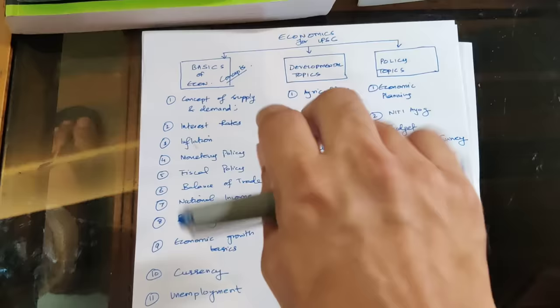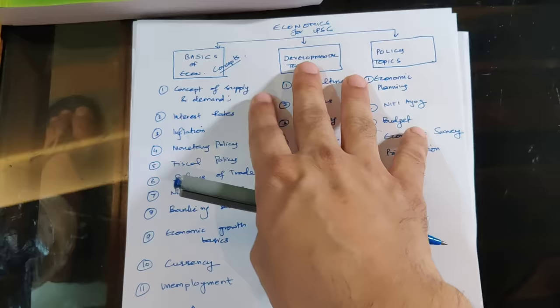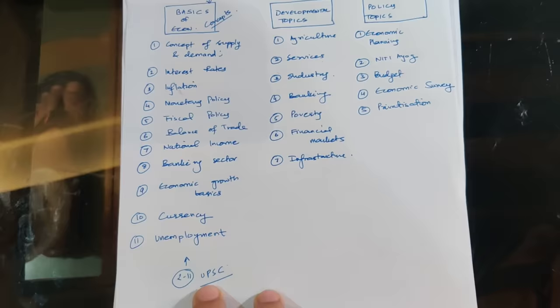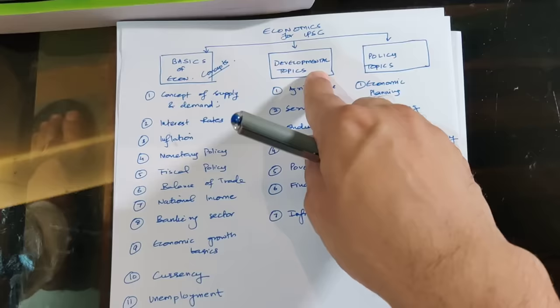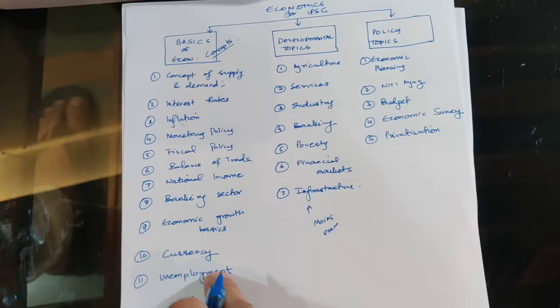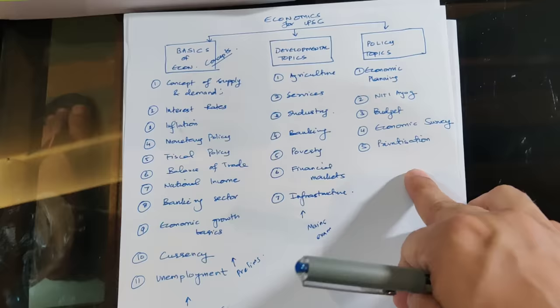For economics for UPSC, you can divide the syllabus into three main topics — these are the bigger-level topics. First is the basics of economics, basic concepts of economics, which UPSC asks every year. The second is the developmental topics, mostly asked in the mains exam. The third are the policy topics, which are mainly also asked in the mains exam.